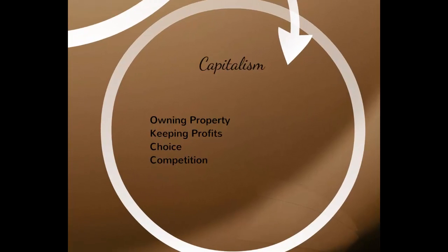You will notice that I tied in the availability of the factors of production with the tenets of capitalism. In a capitalistic or near-capitalistic society, our beliefs and values guarantee access to these factors of production. Capitalists believe you have rights called tenets. The tenets of capitalism are: one, you have the right to own property; two, you have the right to own a business and keep the profits; three, you have the right to choose; and four, you have the right to compete. After reviewing this list, you can see that the factors of production in this country are within your reach.